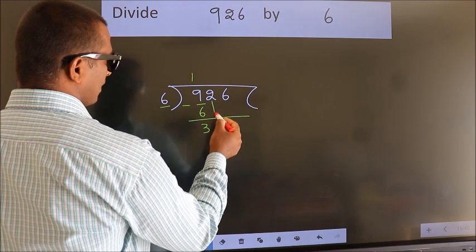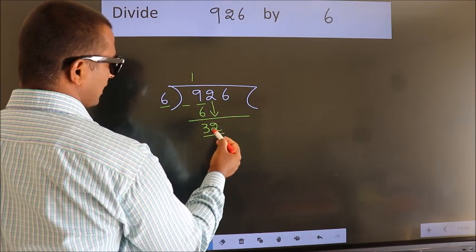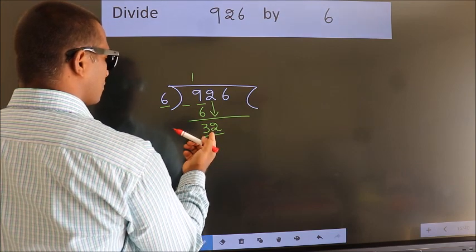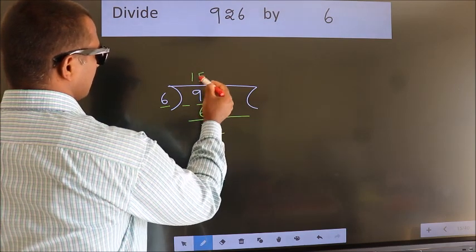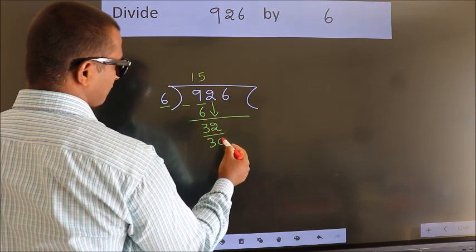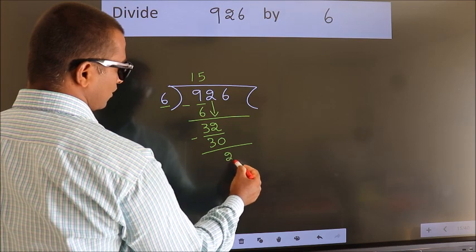After this, bring down the beside number. So, 2 down. So, 32. A number close to 32 in 6 table is 6 fives 30. Now, we subtract. We get 2.